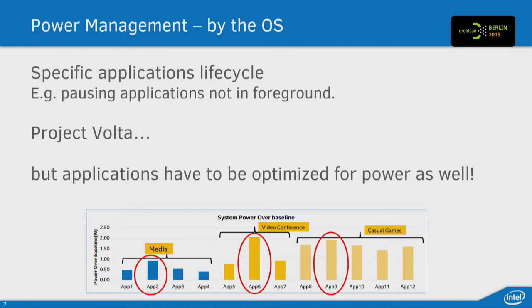There is already a lot of power optimization done at the operating system level. If you look at the application lifecycle, if your application is not in the foreground, it will be paused. You can still have background services, but in background services you need to acquire wake locks to be able to use the CPU for a long time even if your app isn't used. So that already saves battery, because not all your apps are running at the same time by nature.